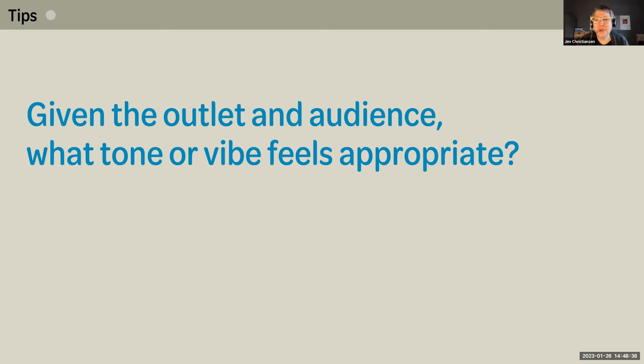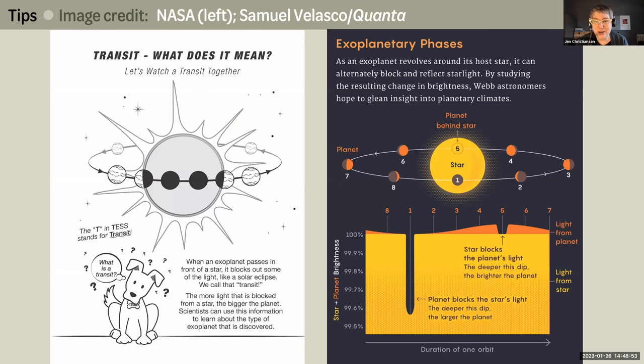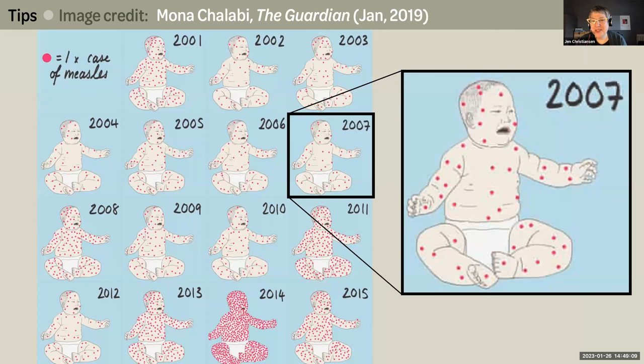Given the audience and outlet, what tone or vibe feels appropriate? The answer to this question, along with the subject matter, will inform decisions related to rendering style and illustrative details. That's demonstrated here by a pair of graphics that both show an exoplanet passing in front of a star. The coloring book page on the left for kids excludes some technical details and jargon, and it's rendered in a more playful style than the graphic on the same topic for adults on the right. And this wonderfully quirky graphic by Mona Chalabi for The Guardian is really well-suited to engage general readers with a topic, but it probably isn't a great match for an academic journal.